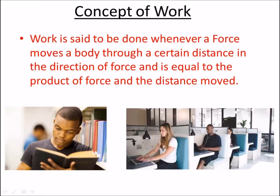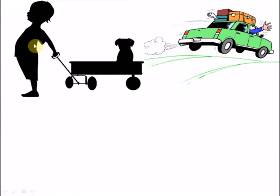Work can be illustrated by this little boy pulling his cat. Work is said to be done because he applies a force to move this particular body through a distance. Similarly, when a car moves — a gentleman traveling — the car moves with a particular force from the engine, covering a particular distance.